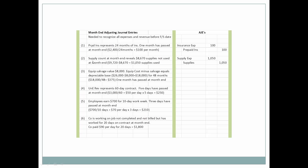Next, let's look at the supplies. The supply account at month end reveals that $8,670 worth of supplies have not been used. Therefore, the total purchased during the month, $9,720, minus the amount still on hand, $8,670, means the company used $1,050 in supplies during the month to generate revenue. So supplies expense would be $1,050, and we're going to credit the supplies asset account to reduce it.